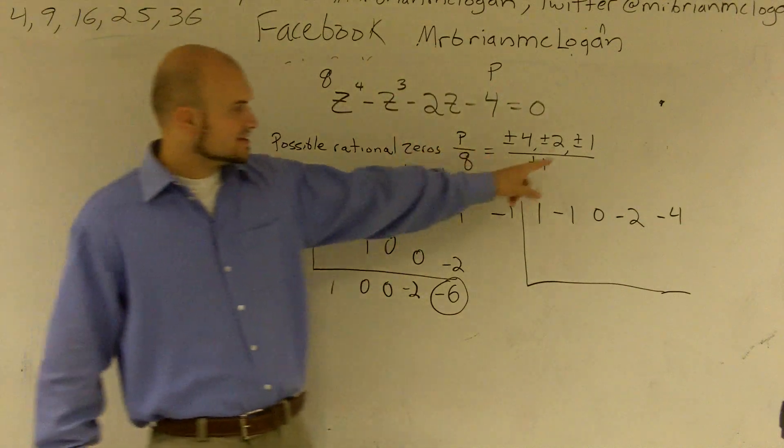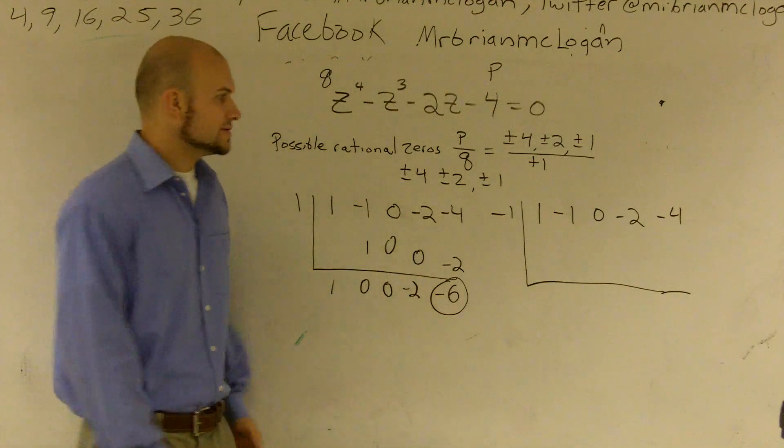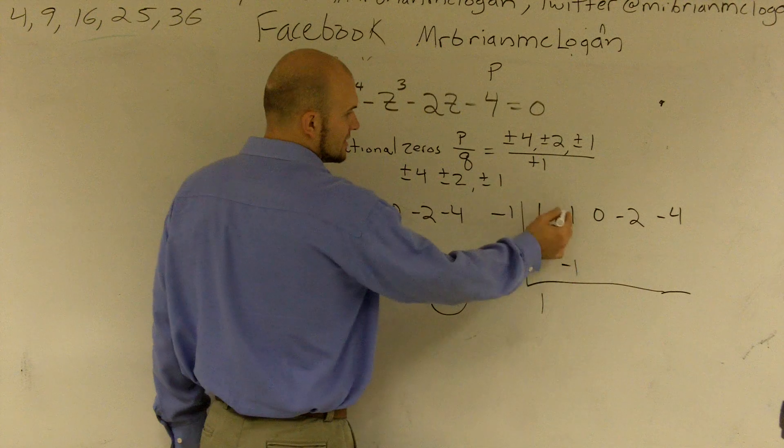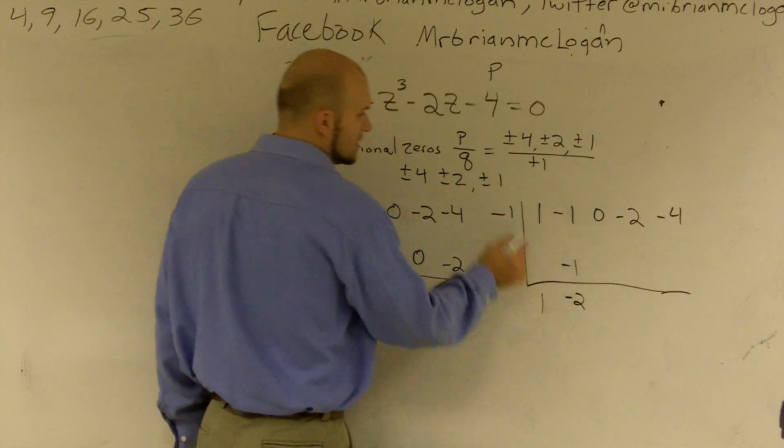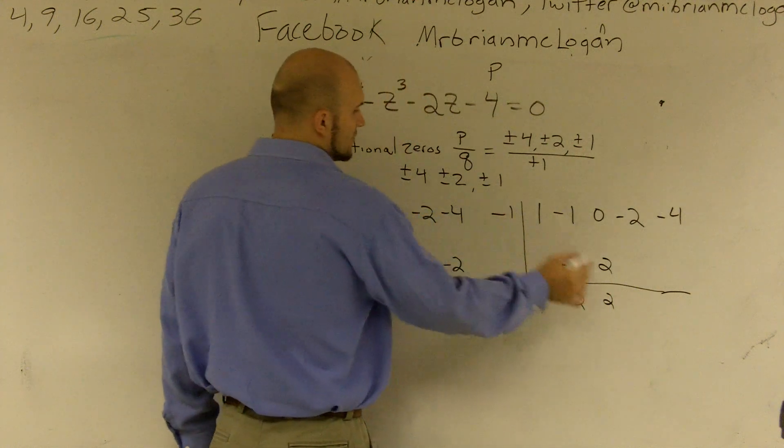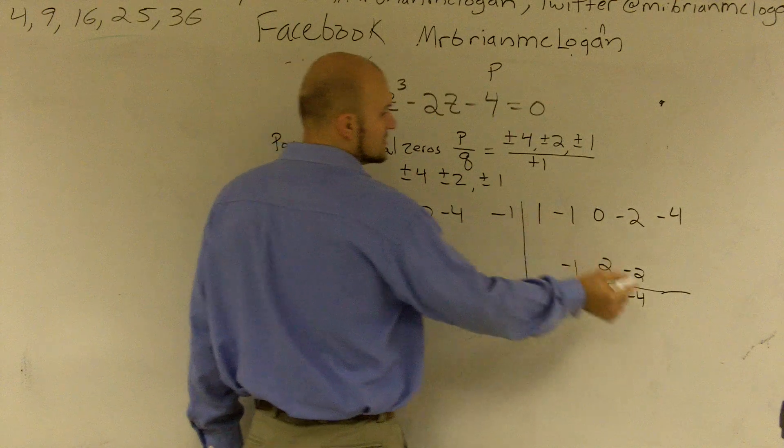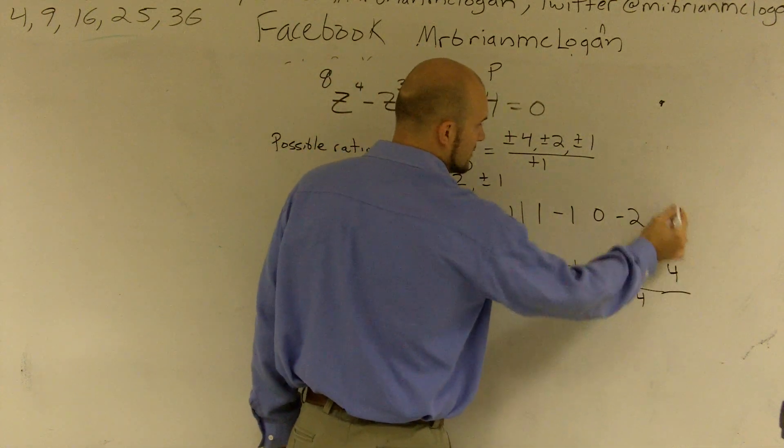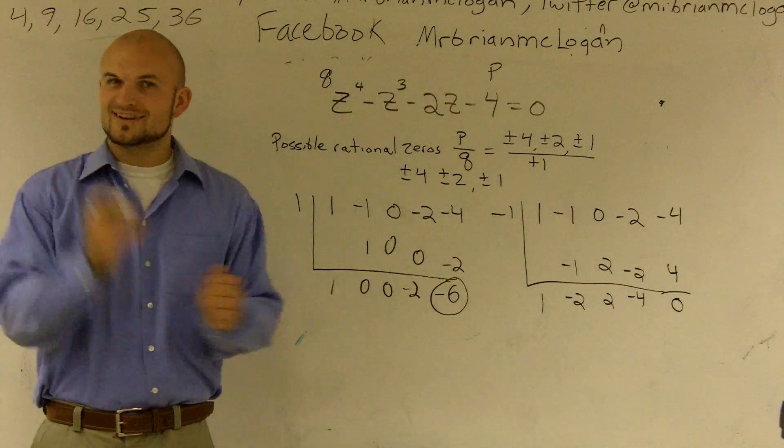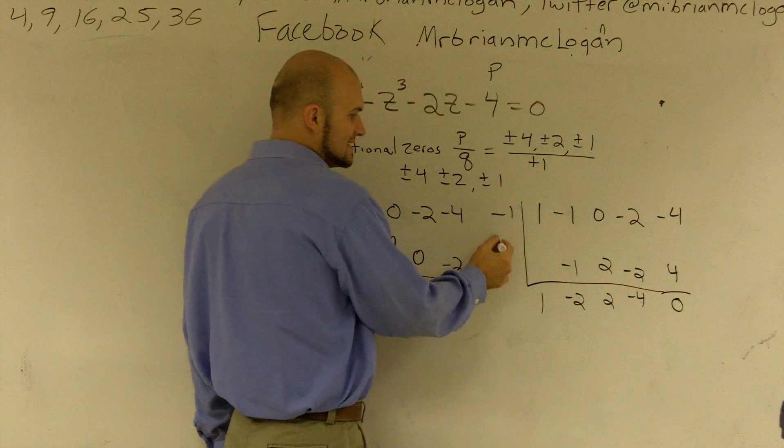Let's go and see if negative 1 is a zero. Drop down my 1. Negative 1 times 1 is negative 1. Negative 1 plus negative 1 is negative 2. Negative 1 times negative 2 is positive 2. 0 plus 2 is 2. Negative 1 times 2 is negative 2. Negative 2 plus negative 2 is negative 4. Negative 1 times negative 4 is positive 4. Negative 4 plus 4 is 0. We got one! We know that negative 1 is a zero.